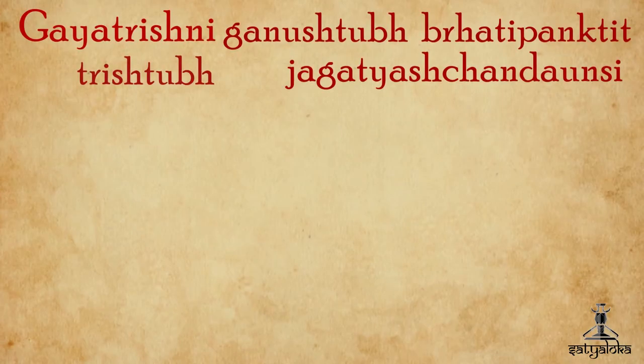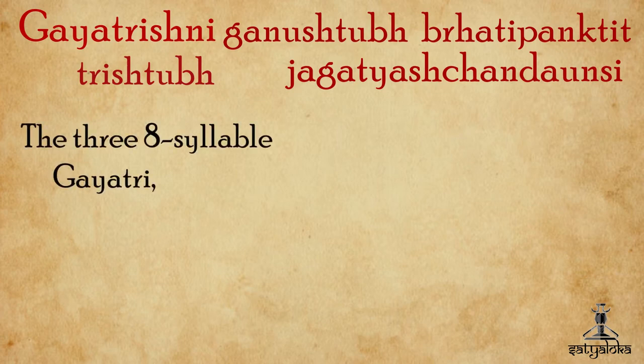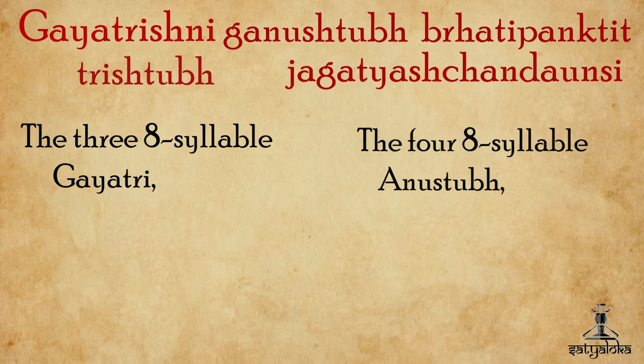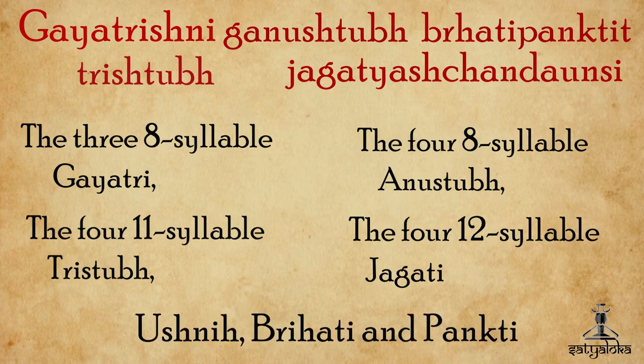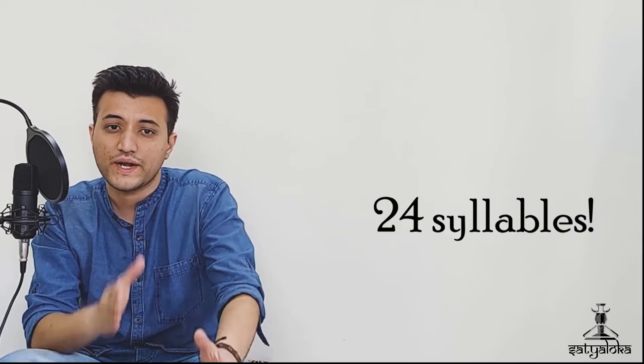Now let's come to the seven meter chhandas or meters of Sanskrit Prasadi. The simplest text of Vedic literature is the Sandhya. A verse in Sandhya mentions the seven types of chhandas: Gayatri, Trishnik, Anushtap, Brihati, Pangti, Trishtap, and Jagati. These include the three eight-syllable Gayatri, the four eight-syllable Anushtap, the four eleven-syllable Trishtap, the four twelve-syllable Jagati, and the mixed pada-meters named Ushne, Brihati, and Pangti.